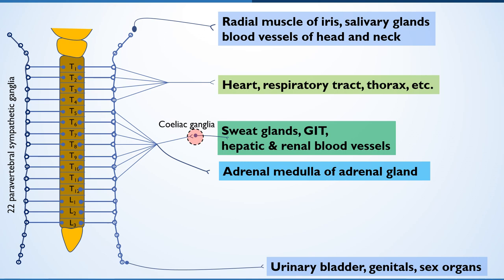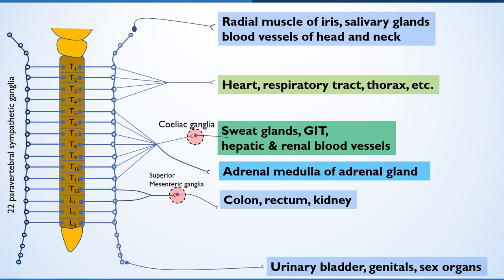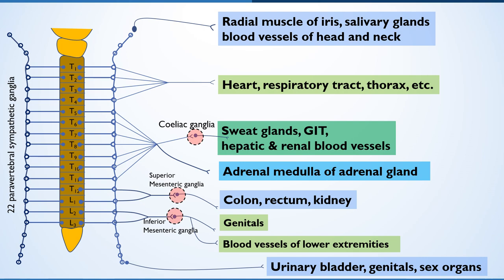Myelinated fibers without ganglia innervate the adrenal medulla of the adrenal gland, specifically the chromaffin cells. The superior mesenteric ganglion is formed from neurons from T12 and L1 vertebrae, lying near the junction of the superior mesenteric artery and aorta; the postganglionic fiber innervates the colon, rectum and kidney. The inferior mesenteric ganglion lies adjacent to the inferior mesenteric artery, with fibers from L2 and L3 innervating the colon, rectum, bladder, genitals and blood vessels of the lower extremities. From this diagram, you can observe a more diffuse ramification of postganglionic fibers at the neuroeffector junction, making the effects of sympathetic neurotransmission more widespread compared to parasympathetic neurotransmission.